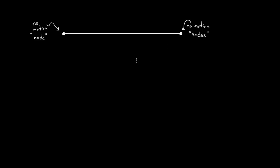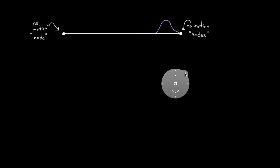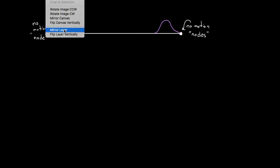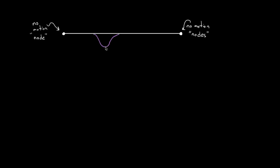So why does a standing wave happen? If you give the end of the string a little pluck and cause a disturbance, that disturbance moves down the line. When it meets a boundary, it reflects back. It turns out when a string hits a fixed boundary — a node — it gets flipped over. You might have tried this with a hose: if you send a pulse down and see how it reflects, it comes back upside down. Every time it reflects, it flips direction and keeps bouncing.